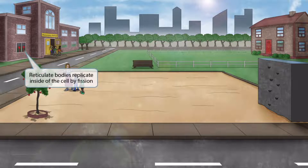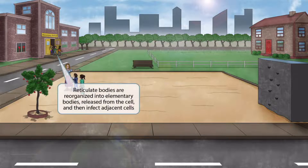Notice that we've shown several rakes inside of the school windows. Rake sounds like reticulate, so this helps you remember reticulate bodies. The school represents the inside of the cell, and the two rakes seen inside the school should help you remember that reticulate bodies replicate inside the cell by binary fission. Finally, elementary school kids leaving the school represents reticulate bodies being reorganized into elementary bodies, released from the cell, and infecting adjacent cells.